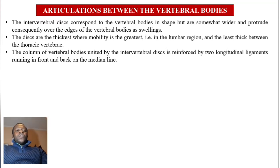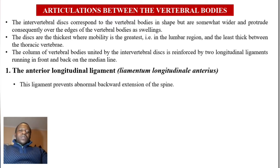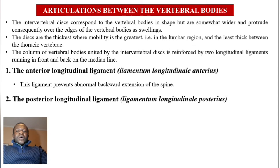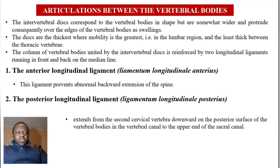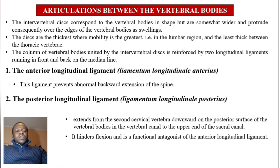The column of vertebral bodies united by the intervertebral discs is reinforced by two longitudinal ligaments — one on the front and another on the back. The first one is the anterior longitudinal ligament, ligamentum longitudinale anterius, which prevents abnormal backward extension of the spine. The second one, the posterior longitudinal ligament, ligamentum longitudinale posterius, extends from the second cervical vertebra downwards on the posterior surface of the vertebral bodies in the vertebral canal to the upper end of the sacral canal. Its function is hindering flexion, and it is a functional antagonist of the anterior longitudinal ligament.